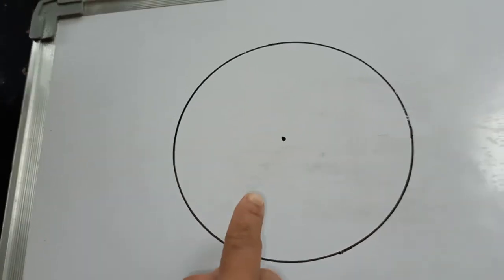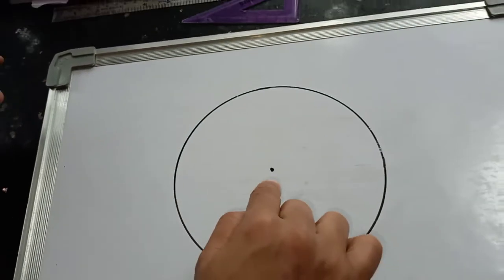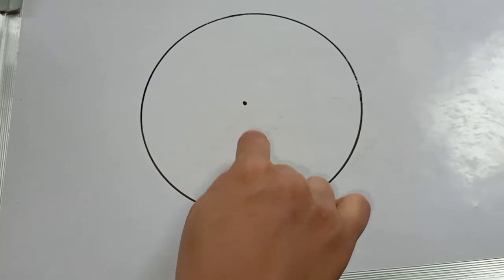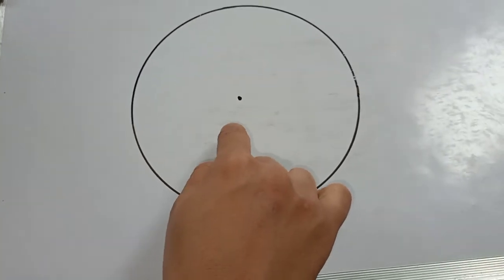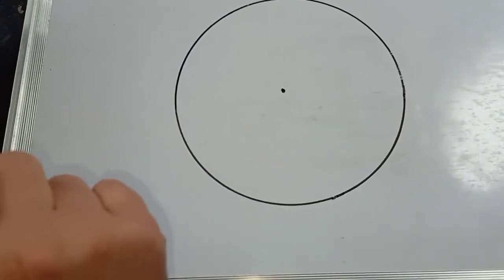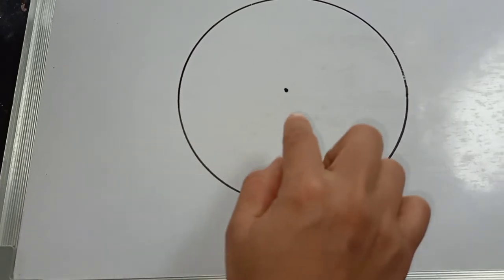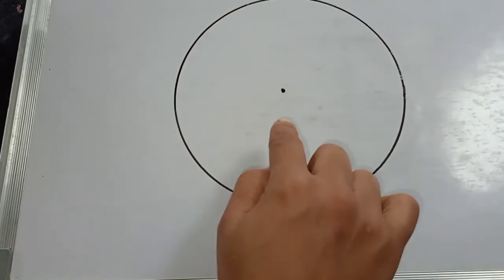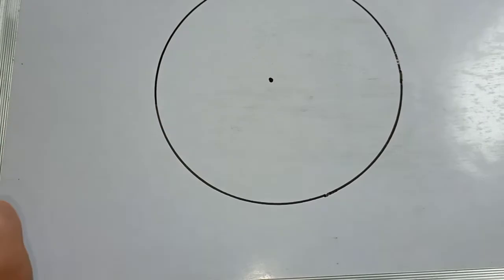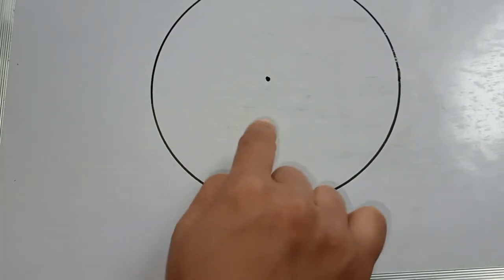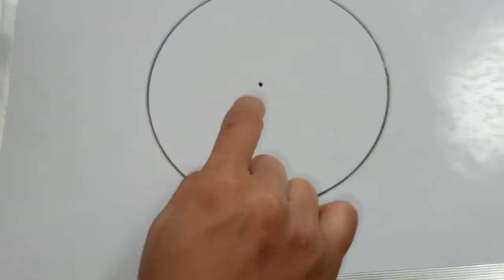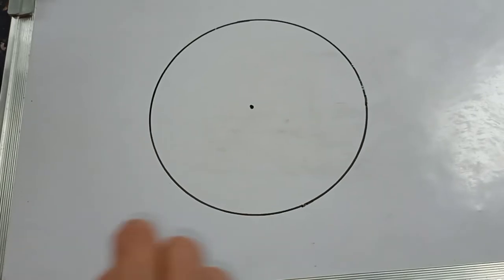Take your notebook and draw a circle with radius 3 cm using a compass. Then divide that circle into 4 equal parts by using the set square from your geometry box.